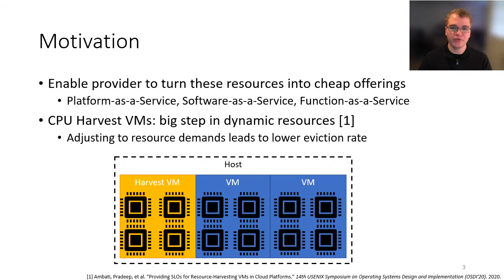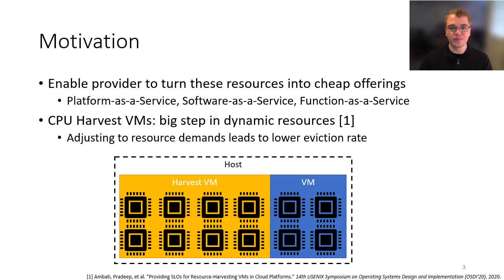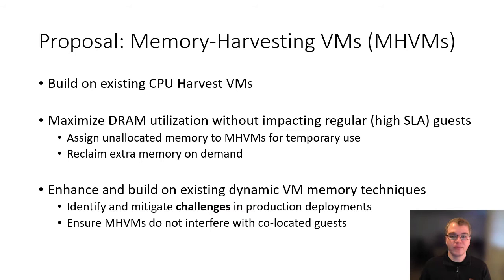Quickly, the way harvest VMs work is: if you have a host with a few VMs and then a harvest VM harvesting a few CPUs, if one of those VMs leaves, the harvest VM is then allowed to grow by the host into those additional resources, making use of them where otherwise they would have gone to waste.